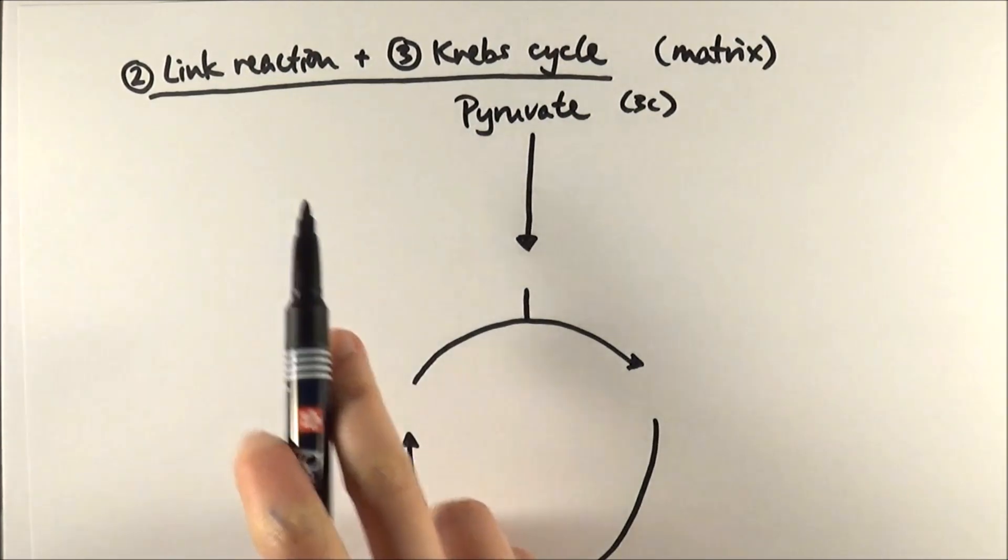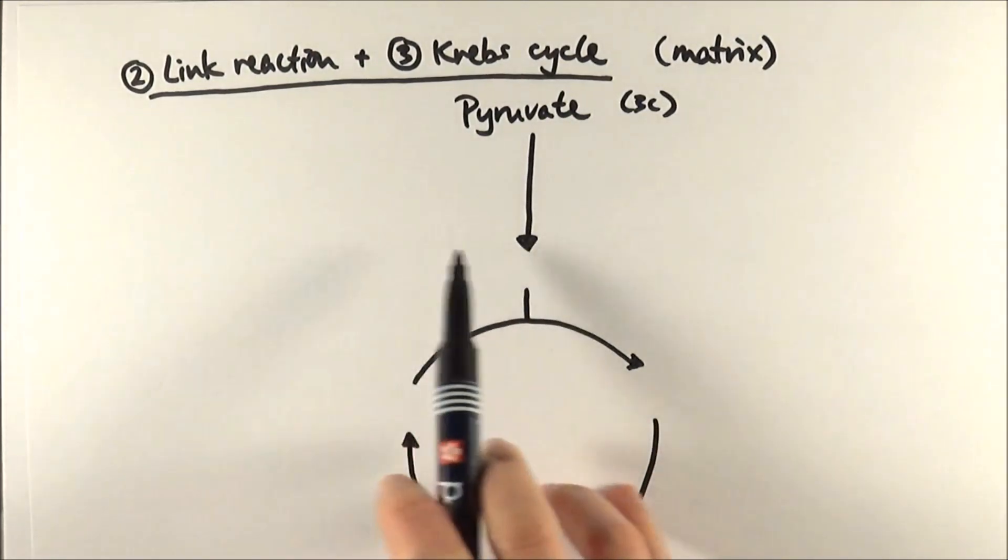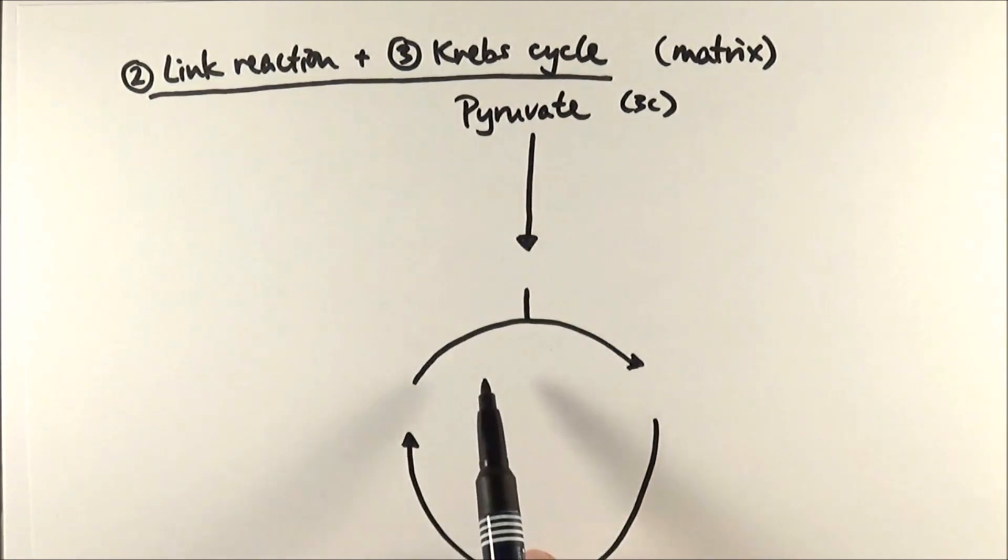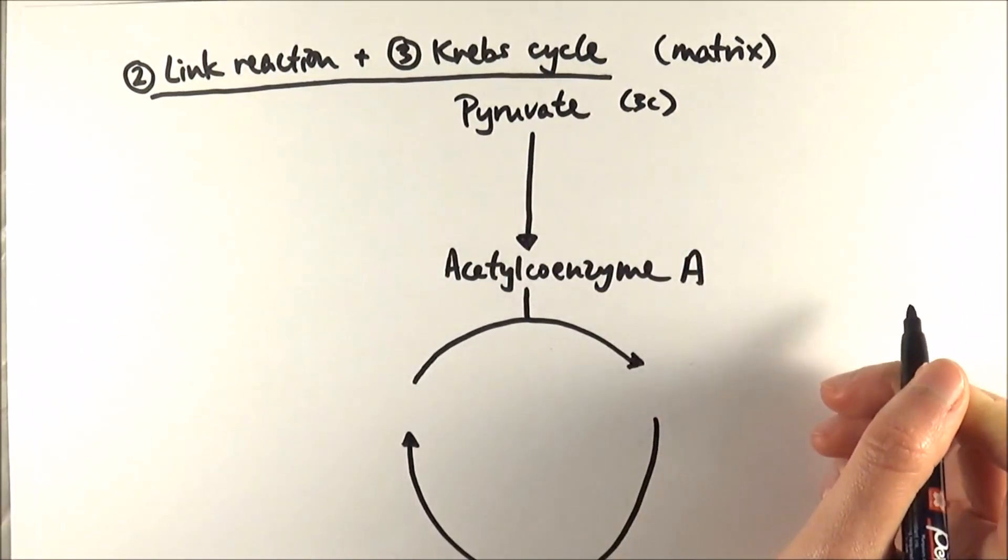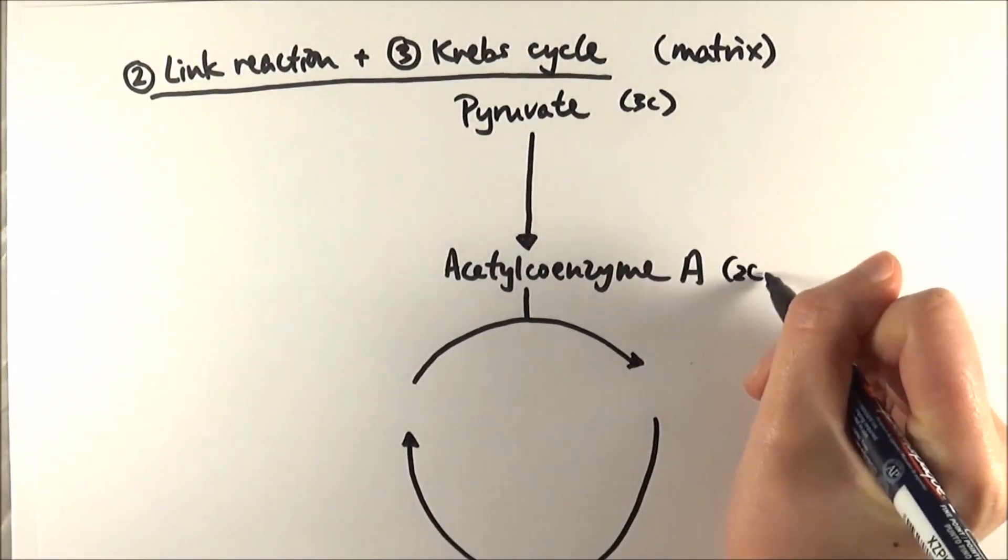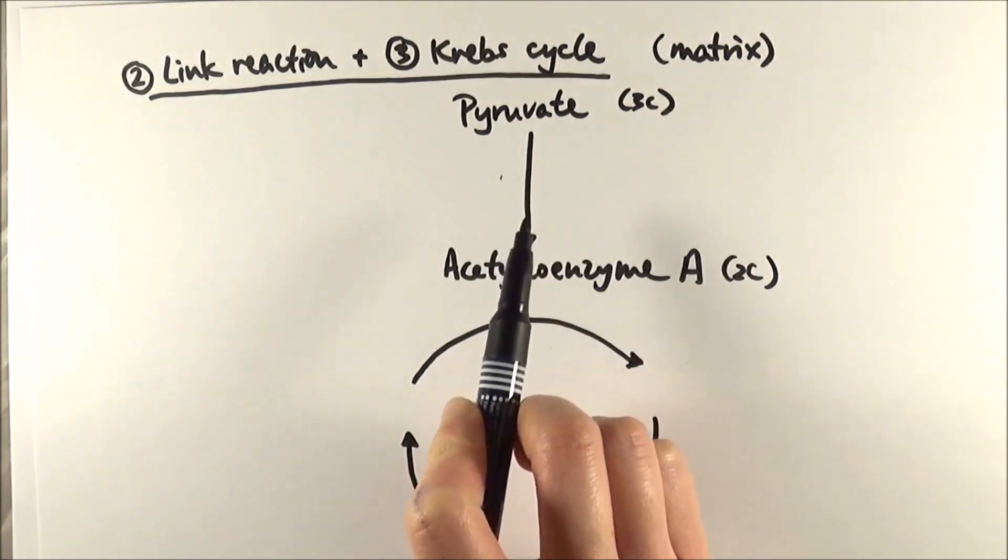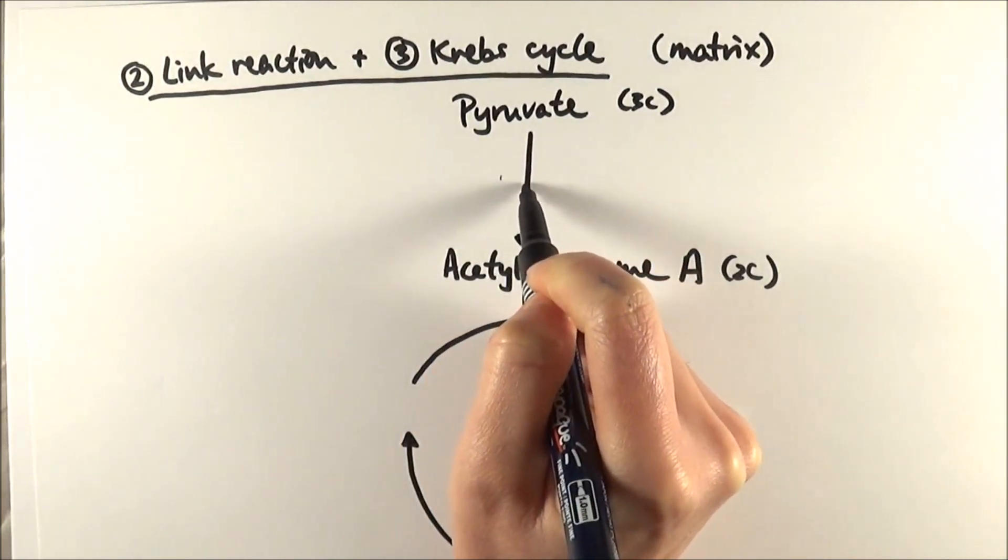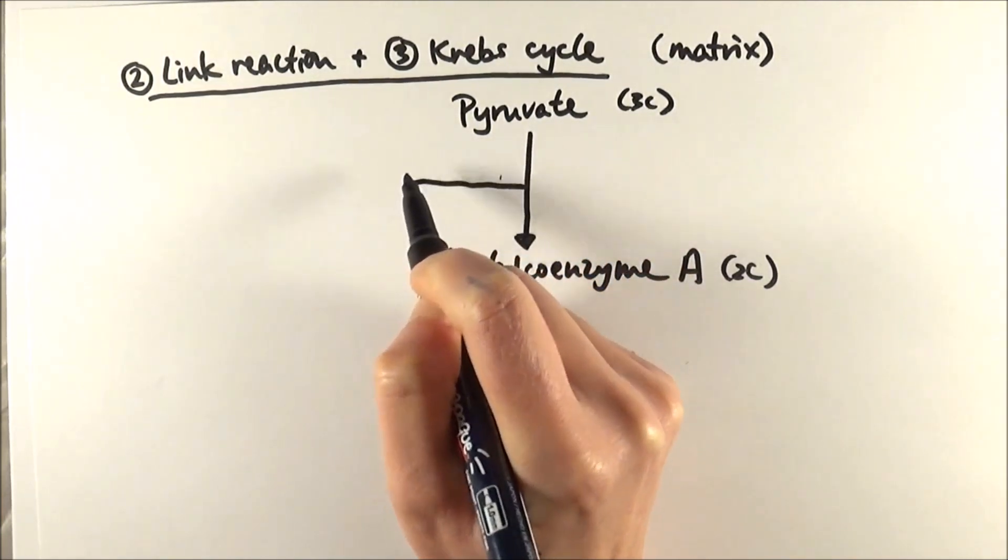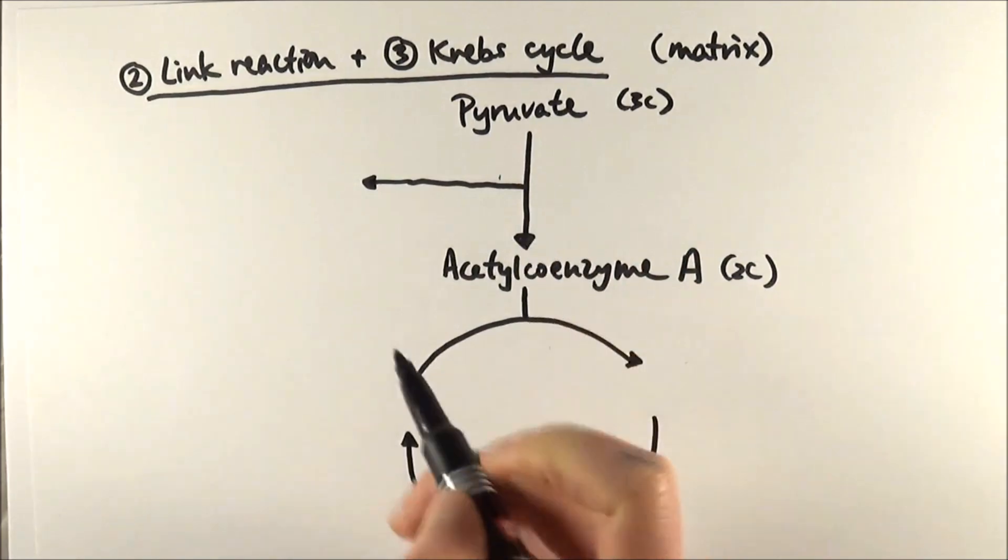What happens next is the link reaction. This aspect here is the link reaction and the Krebs cycle. From pyruvate we make something called acetyl coenzyme A. Acetyl coenzyme A is a two carbon molecule, so from pyruvate to acetyl coenzyme A we have to have lost a carbon somewhere. This is one of the reasons why we breathe out carbon dioxide - we've lost one carbon here.